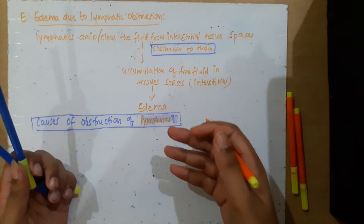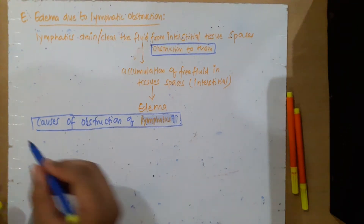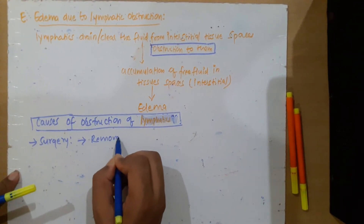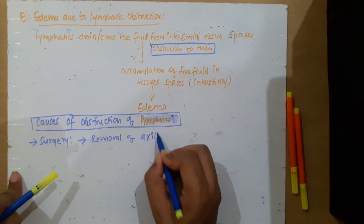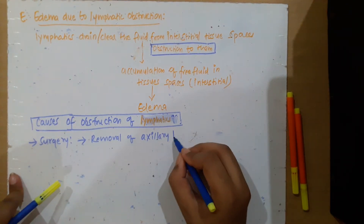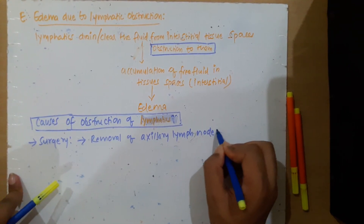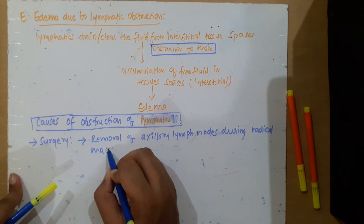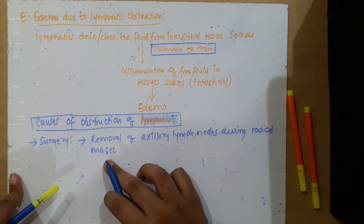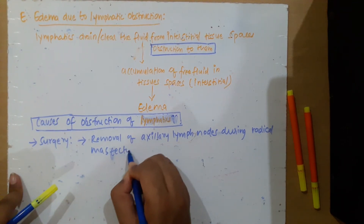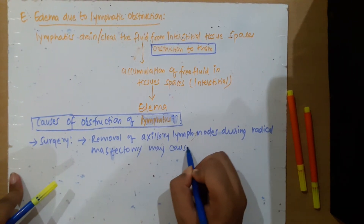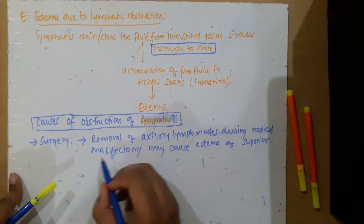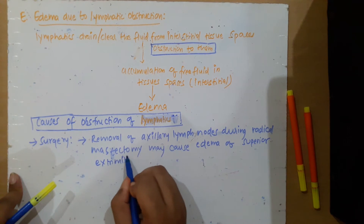The first cause is surgery — removal of axillary lymph nodes during radical mastectomy, which may cause edema of the superior extremities.